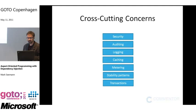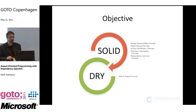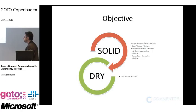So today I want to talk about how we actually implement cross-cutting concerns, with a constraint: we don't want to write a lot of spaghetti code. I want to talk about how we can do this by following the principles of SOLID and DRY.